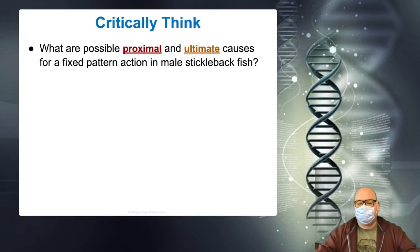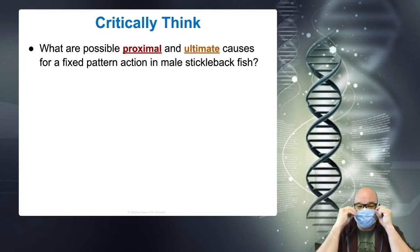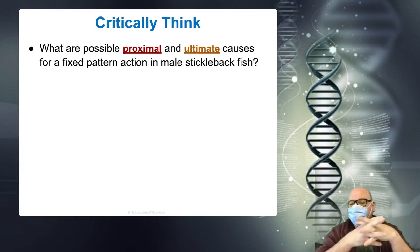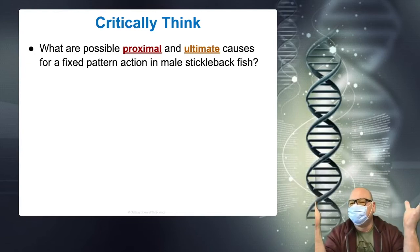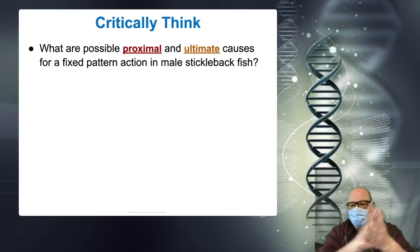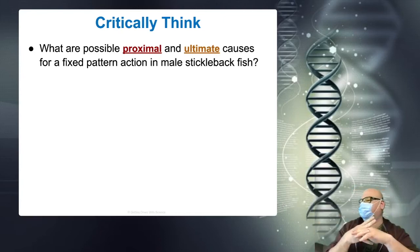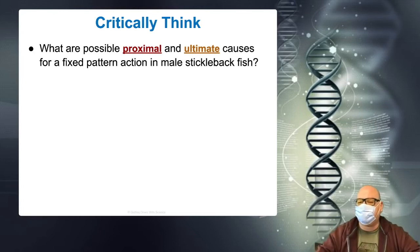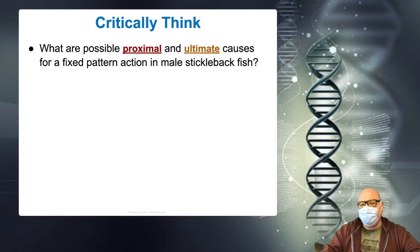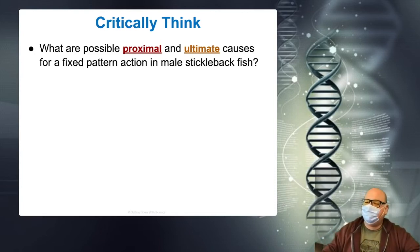Going back to our fish: what's the proximate cause of the behavior? When the fish sees red — that's it, it's not a trick question. What's the ultimate cause? Scare away the competitors so my genes are the ones that go into the next generation. Think about this in terms of proximate cause: the animal does this when X happens. Ultimate: survival and reproduction. So there are two sides to behavior.